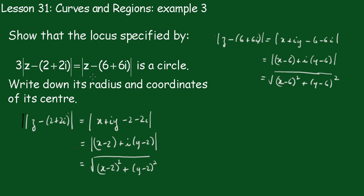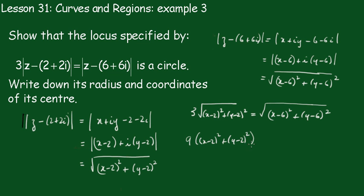Now going back into the original equation, we'll have 3 times the square root of x minus 2 all squared plus y minus 2 all squared equals the square root of x minus 6 all squared plus y minus 6 all squared. Now I'm going to take this squaring both sides, and not forgetting to square this, we get 9 outside of x minus 2 all squared plus y minus 2 all squared equals x minus 6, y minus 6 all squared.